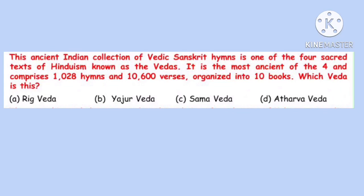Question 11. This ancient Indian collection of Vedic Sanskrit hymns is one of the four sacred texts of Hinduism known as the Vedas. It is the most ancient of the four and comprises 1028 hymns and 10,600 verses organized into 10 books. Which Veda is this? Correct option is A: Rig Veda.